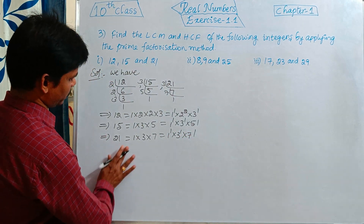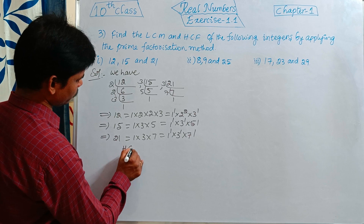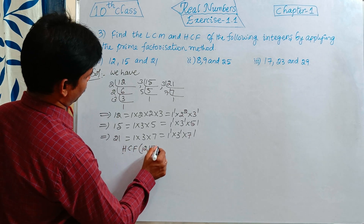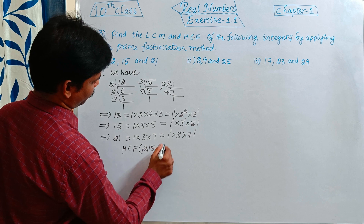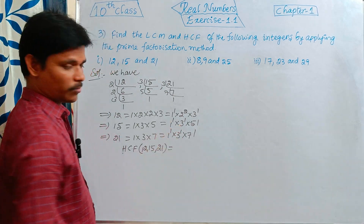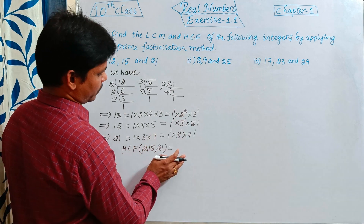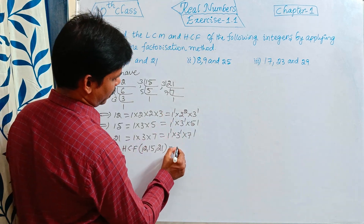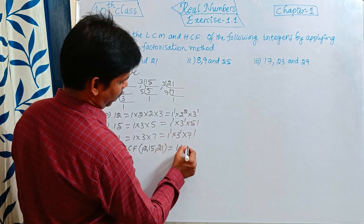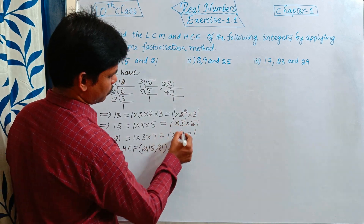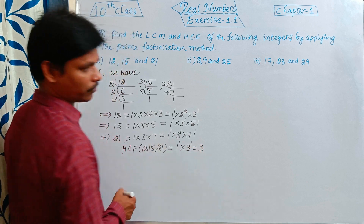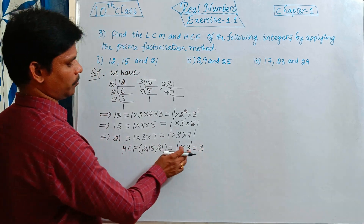So write the HCF. HCF of 12, 15, 21 is equal to the smallest powers of common prime factors. The common prime factors are 1 and 3. The smallest powers are 1¹ × 3¹, which equals 3.